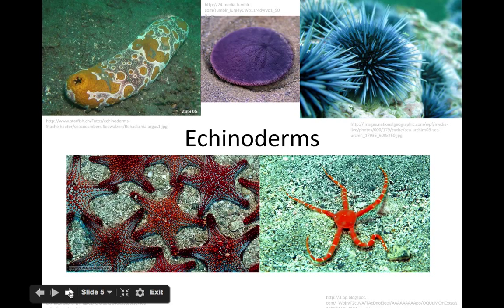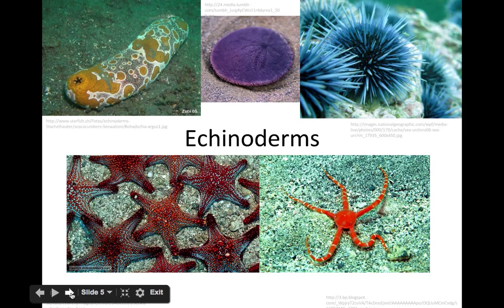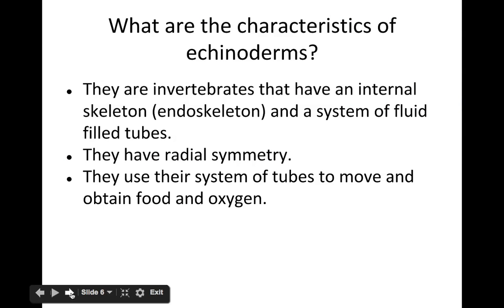Now here's Ms. Dettman to tell you about echinoderms. On your chart, we're looking at the phylum of invertebrate animals called echinoderms. These examples include a sea cucumber in the upper left corner, a sand dollar — usually seen at the beach after the animal inside has died — sea urchins, and a whole variety of different sea star species.